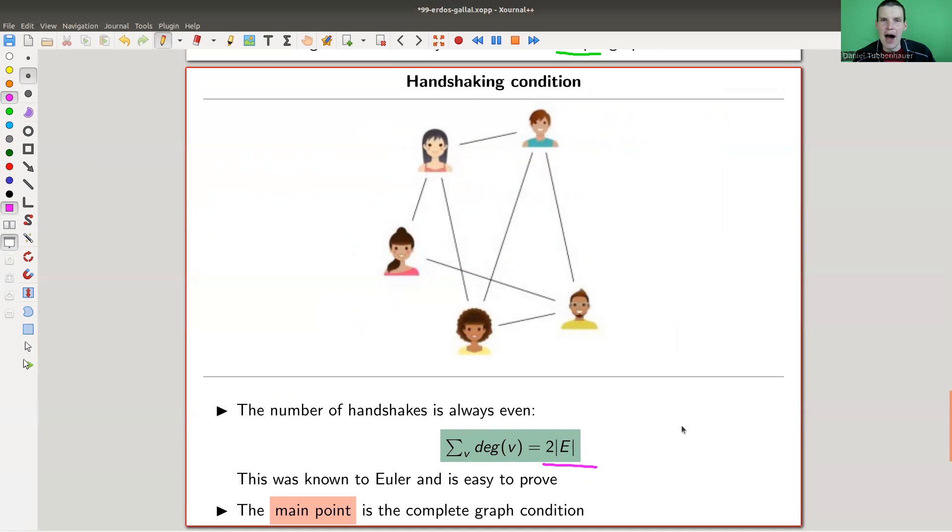In more common language, it says if you have a certain number of persons, and a certain number of persons shake hands, right, this person here shakes hands with this person, then, well, this one shakes a hand, this one shakes a hand. So you always get something even because everyone shakes a hand. So that's basically what it is, right?